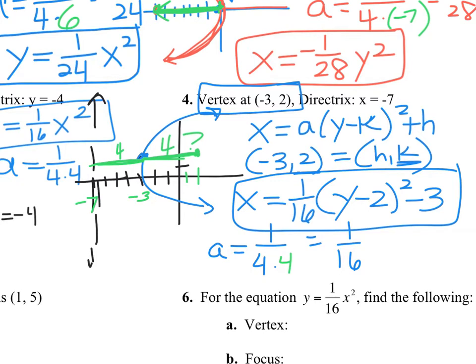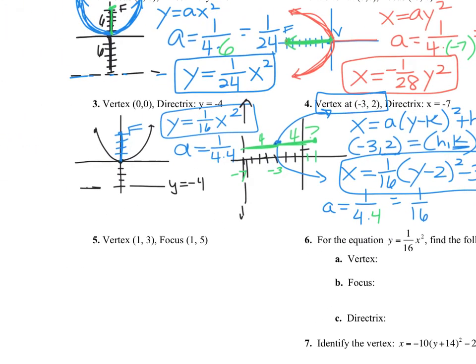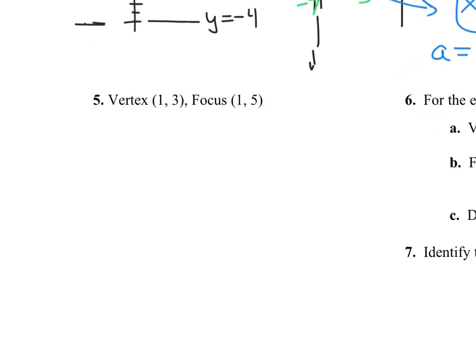That's probably going to be the hardest question on the quiz Thursday. If it were opening to the left, a would be negative. But since it opens to the right, a is positive. We're going to do one more of those — I'll walk you through it again because these are tough.